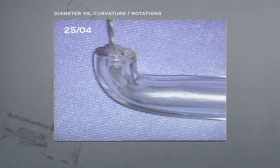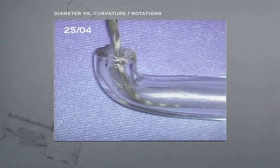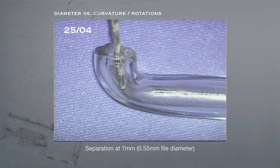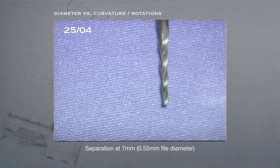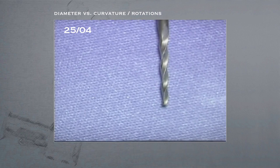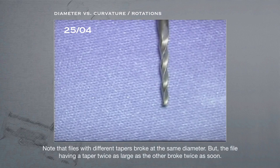Using the same methodology, a 2504 was inserted, only to have it separate at 7 millimeters from the tip, where it also had a .55 millimeter diameter. Note that the files with different tapers broke at the same diameter, but the file having a taper twice as large as the other broke twice as soon.